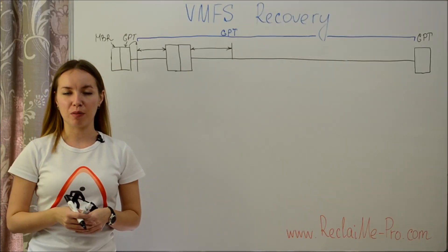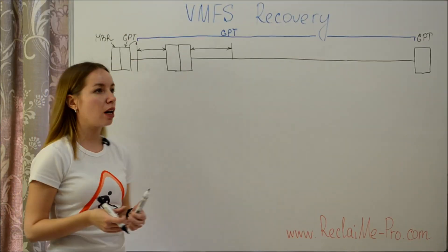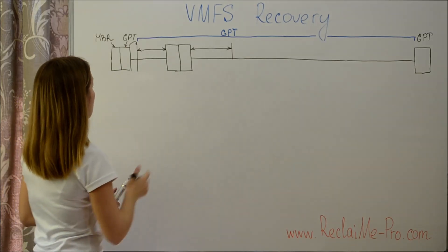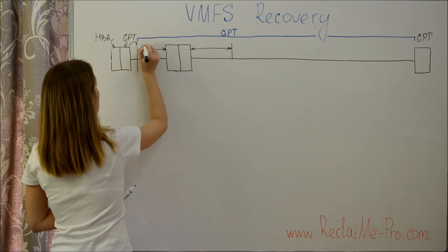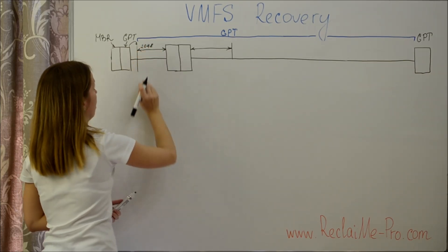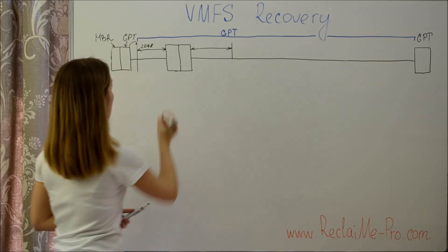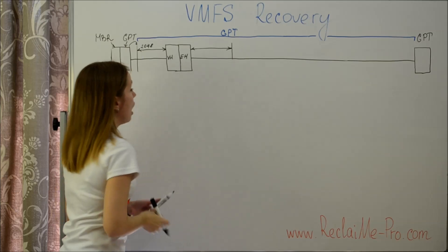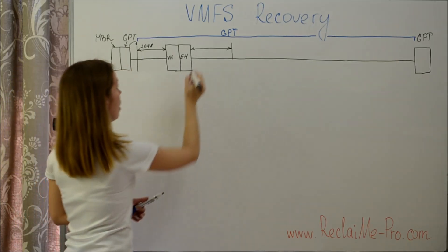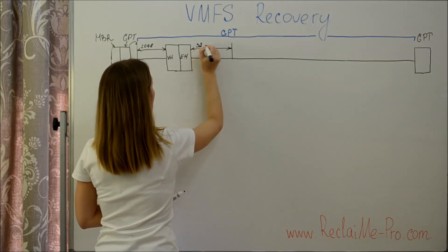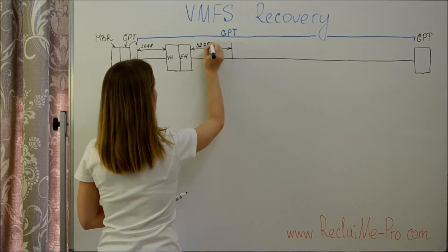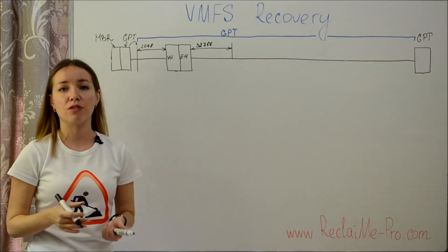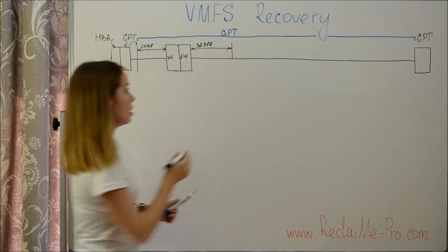Now let's look at how VMFS is organized. We have a physical disk partitioned with MBR and GPT. Then 2048 free sectors follow, followed by the volume header and the extent header. After the headers, there are 32,766 reserved sectors, followed by 256 MB segments.